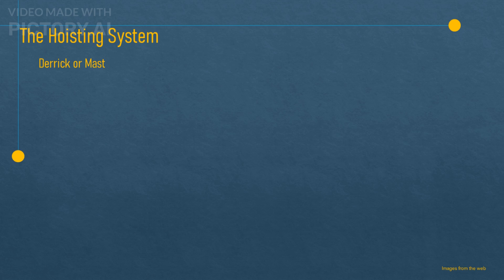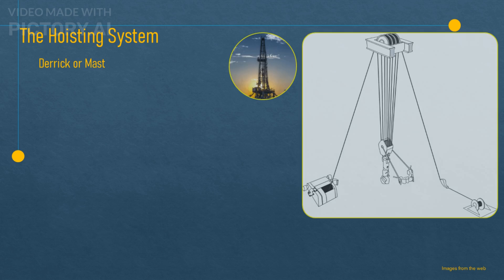The derrick or mast. This is the tall steel tower that rises above the rig floor and supports the hoisting equipment. It also provides stability to the rig and stores drill pipe in stands.